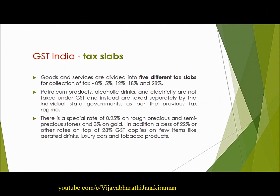This slide shows how goods and services are divided into five different tax slabs for collection of tax at five different rates: 0%, 5%, 12%, 18%, and 28%. There are still certain products not brought under the GST regime and still taxed under the previous tax regime. There are also certain products taxed at 28% GST that attract a cess of 22% or more, like aerated drinks, luxury cars, tobacco products, and so on.